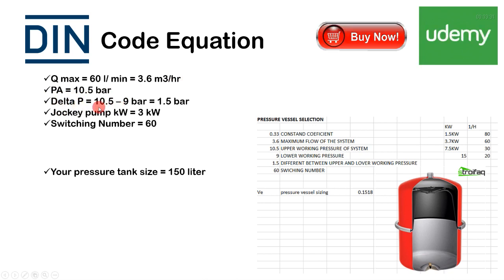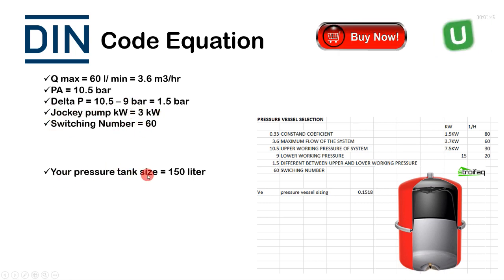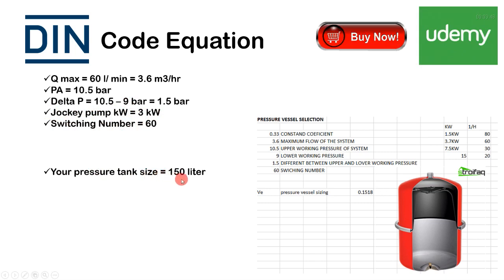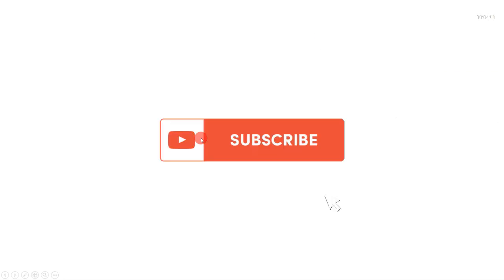DeltaP is 10.5 bar minus 9 bar, which equals 1.5 bar — the minimum pressure differential in the system. The jockey pump is 3 kilowatts, giving a switching number S of 60. The calculated pressure tank size is 150 liters. This calculation sheet and Excel file are available in the Udemy course.